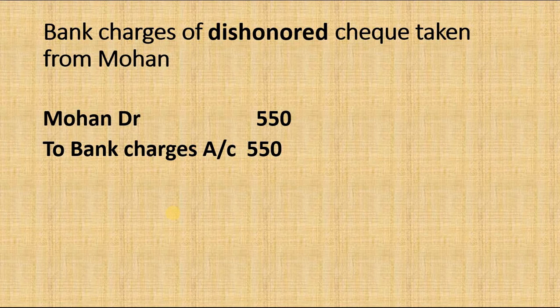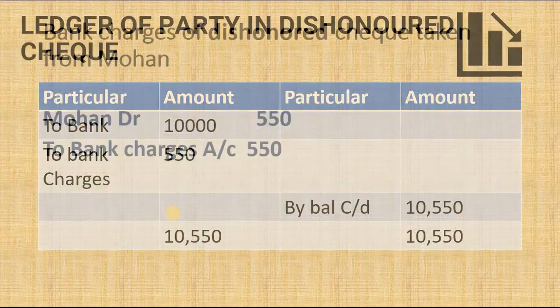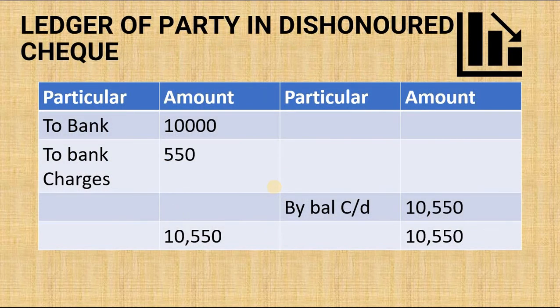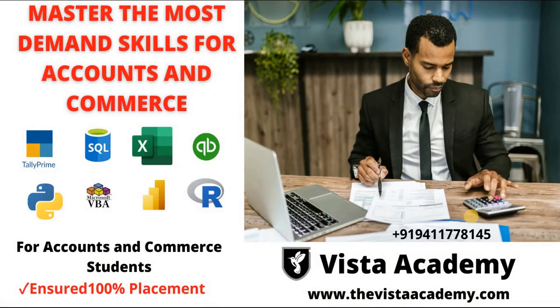When we create the ledger of Mohan, the debit side will show Rs. 10,000 for the dishonored check and Rs. 550 for bank charges. So the balance of Mohan's ledger shows that we have to take Rs. 10,550 from Mohan. We are Vista Academy — if you are interested in our courses on new skills in accounting, you can join our classes. Thank you very much.